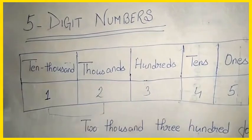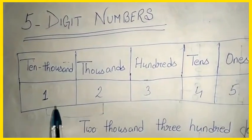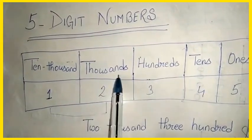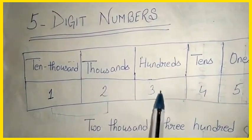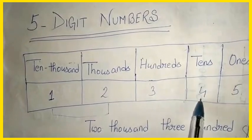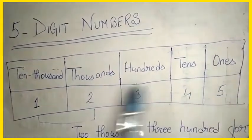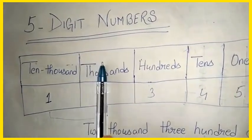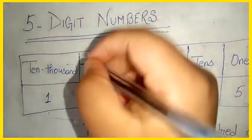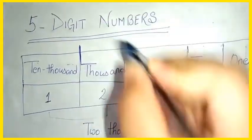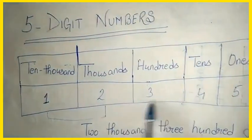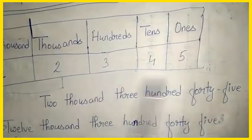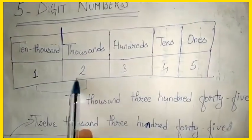Let us take an example. Here I have written: in the ten-thousands place I have written 1, thousands place 2, hundreds place 3, tens place 4, and in ones place 5. Now imagine there is no ten-thousands place — only up to thousands, which means up to four-digit numbers. So we would read this number as 2345.